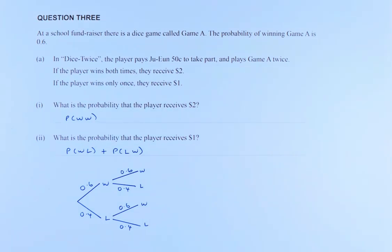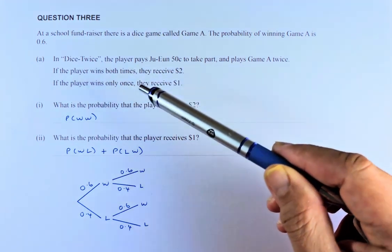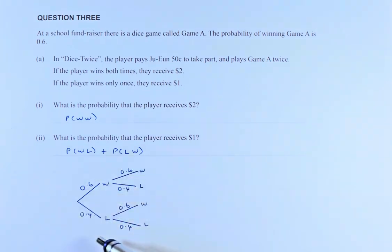So, the question is, what is the probability that the player receives $2? To receive $2, they have to win both times. So, in this probability tree, a win and a lose - the win is 0.6, the lose is 0.4 for the first attempt. In the second attempt, again, the same thing: 0.6 for a win, 0.4 for a loss, 0.6 for a win, and 0.4 for a loss.